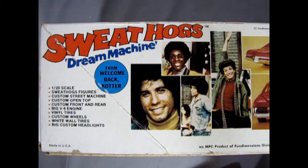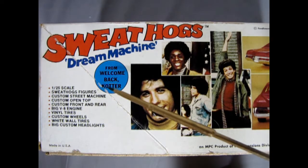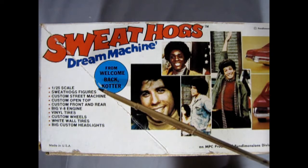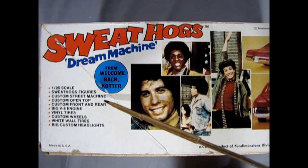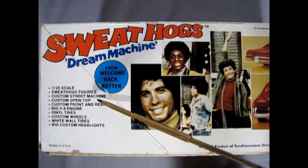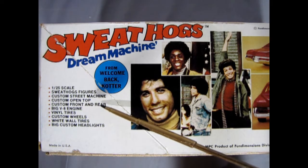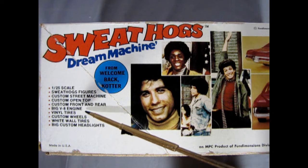Here on the side of the box we have the Sweathogs Dream Machine. This is a 1/25th scale model kit. It comes with the Sweathog figures, custom street machine, custom open top, custom front and rear, big V8 engine, vinyl tires, and custom wheels.